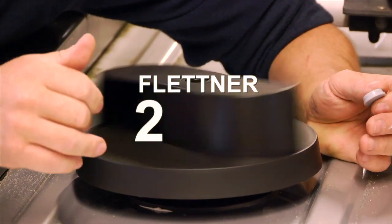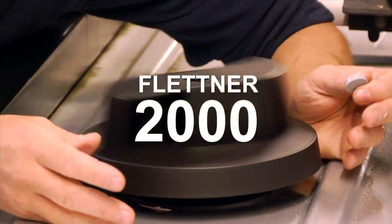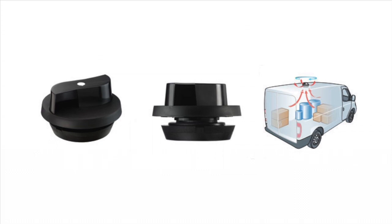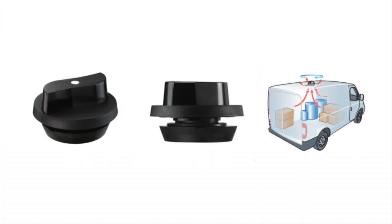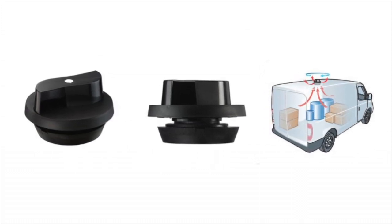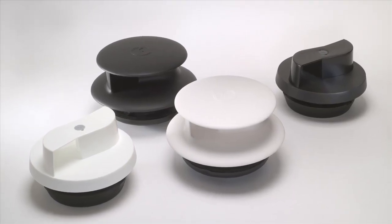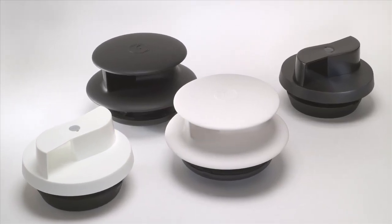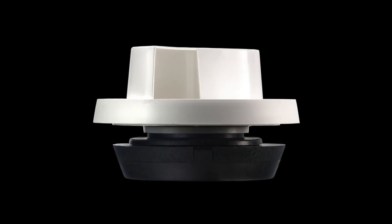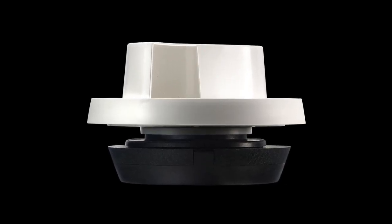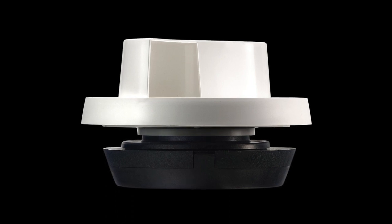This video demonstrates the fitting process for your Flettner 2000. In this short film, we demonstrate an F2000 vent being fitted to a commercial vehicle, but the same method will apply should you wish to fit this ventilator to a horse box, RV, truck or trailer, a portable building, or for other flat-roofed applications.